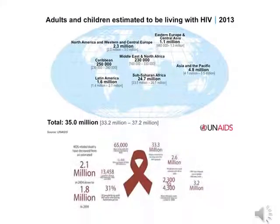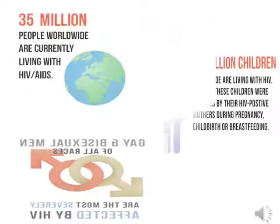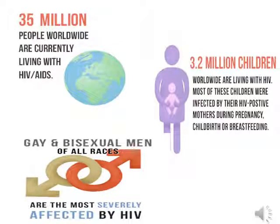Here are some pictures showing the estimated number of children and adults living with HIV across the globe. There are 35 million people worldwide currently living with HIV, and 3.2 million of them are children. Most of these children were infected by their HIV-positive mothers during pregnancy, childbirth, or breastfeeding. Gay and bisexual men of all races are among the most severely affected by HIV.